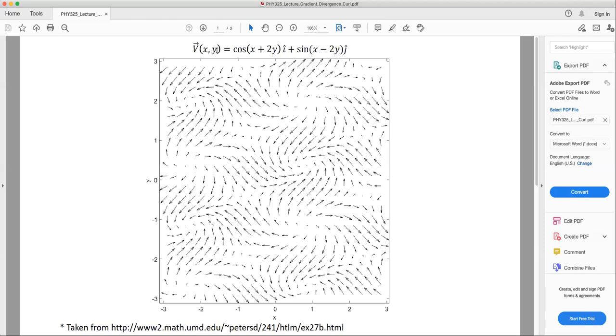Namely, v of x, y is equal to cos x plus 2y in the i hat direction and sine of x minus 2y in the j hat direction. And this vector field looks something like this.